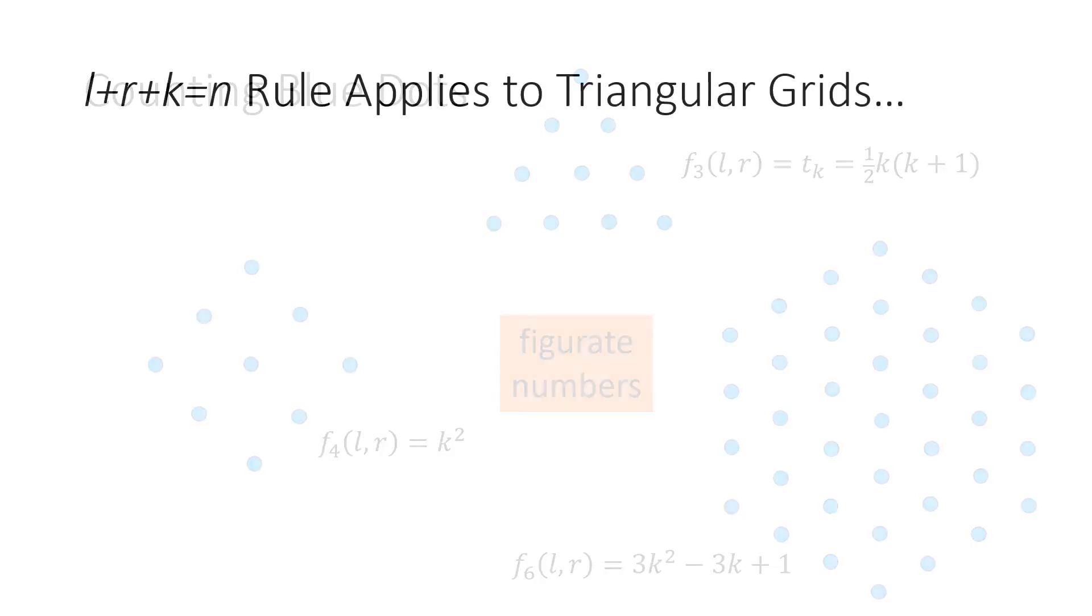Now, to show you that the same rules for squares on square grids apply to triangular and hexagonal cases. Recall that for the squares, the formula L plus R plus K equals N. This formula also applies to counting families of triangles in regular triangular grids. As we did for the squares, we can show that triangles obey a similar counting function. Given this triangular grid and this particular triangle, we can identify the numbers of triangles in its family. For example, I've kept L equal 2 and R equals 1.